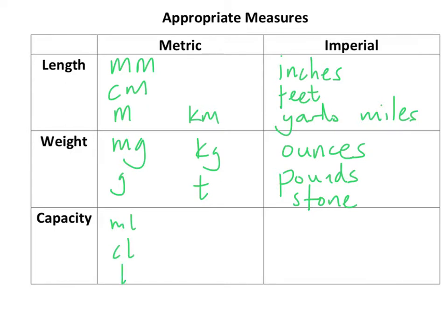For imperial capacity, the ones you need to know are pints and gallons. Eight pints make a gallon. A pint is what you'd see at a pub, and it's about half a litre — roughly a can and a half of soft drink.